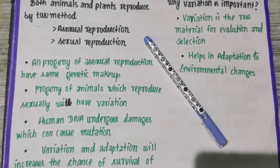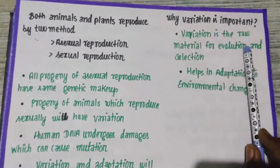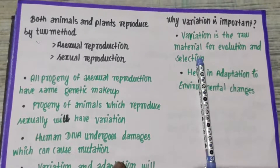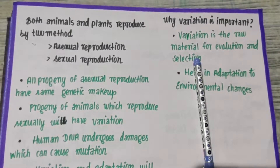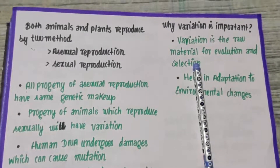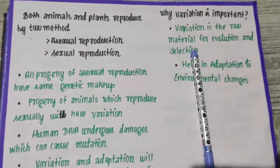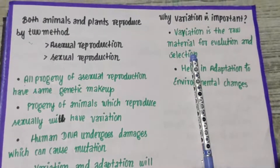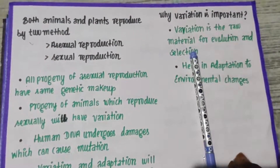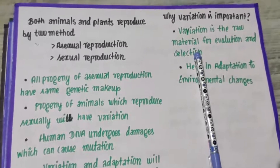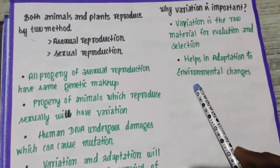Recall the giraffe example — that is why variation is very important, because it is a raw material for evolution and natural selection. Natural selection is nothing but nature supporting the organism that is better adapted, increasing its population. That is what we will be learning in evolution.